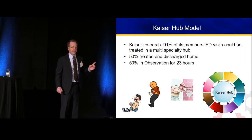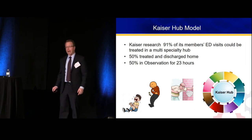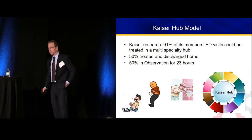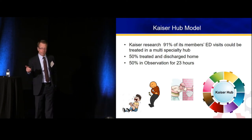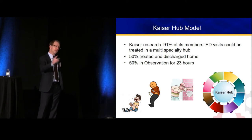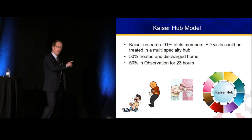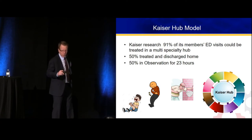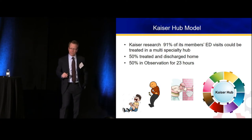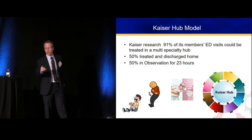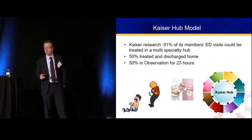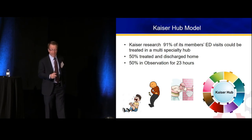We're also competing with a parallel model. Certain insurance companies have taken things even further. Here's the Kaiser hub model. Kaiser research found 91% of its members' ED visits could be treated in a multi-specialty hub — 50% treated and discharged to home, never coming to an emergency department.